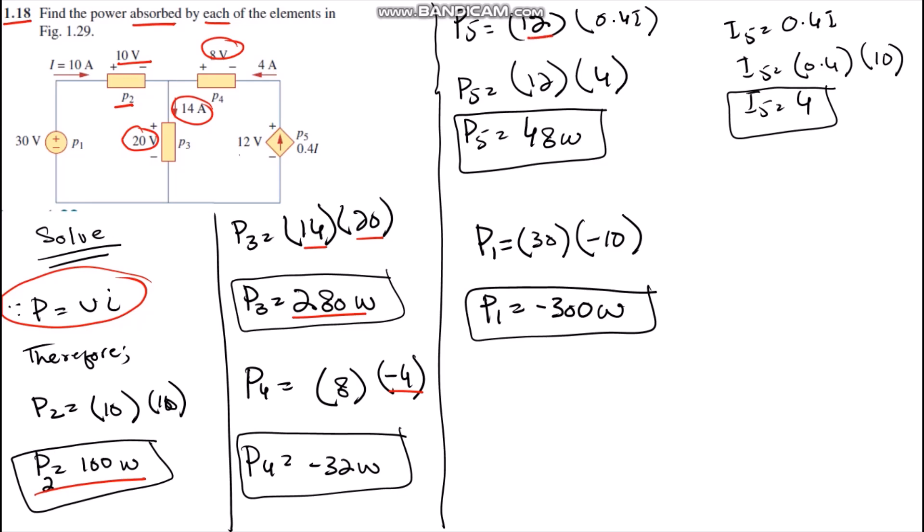For P5, the voltage is 12 volts which is positive, and the current is 0.4I. I is 10 amperes as shown in the figure. We solve for the current: I5 equals 0.4I. Substituting the value of I, we get I5 equals 4 amperes.